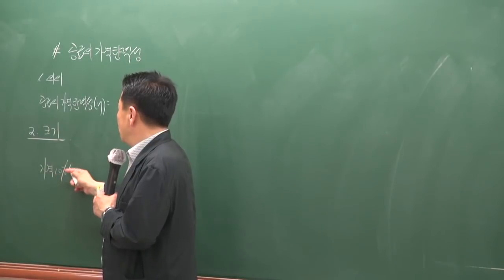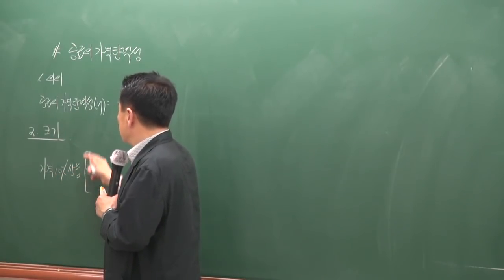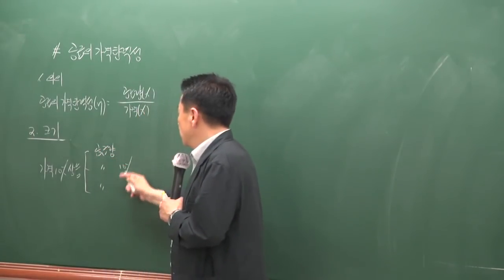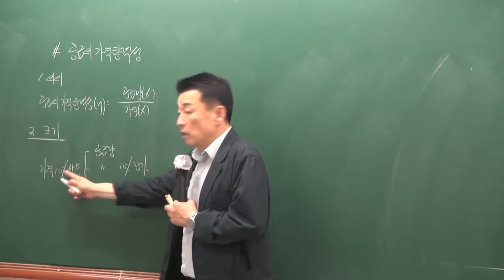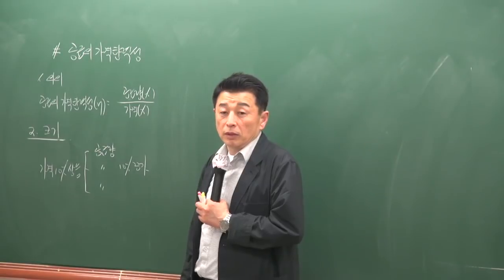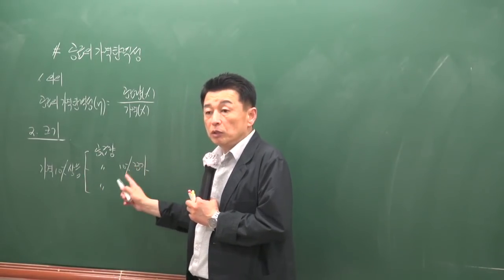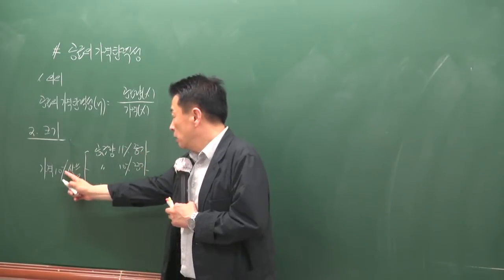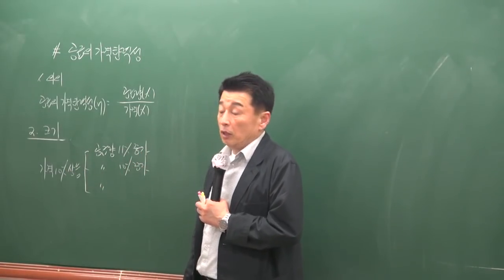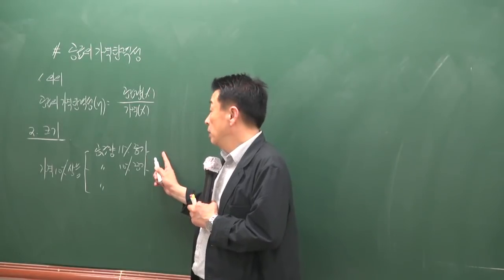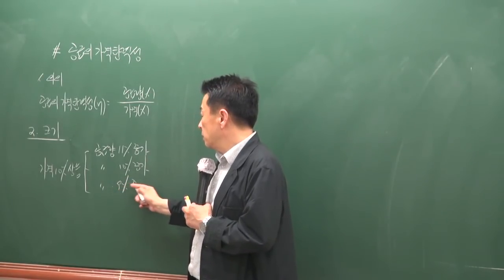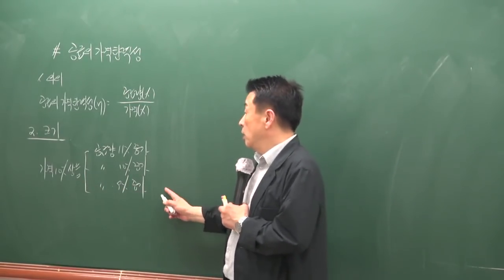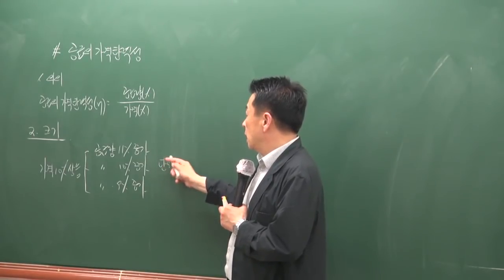가격이 상승했을 때 공급량은 다 증가하죠. 10%가 증가할 때 같으면 단위 탄력적이라고 해요. 10분의 10이니까 1이잖아요. 11%가 증가하면 가격 변화율보다 공급량 변화율이 크니까 1보다 크면 탄력적이죠. 9%가 증가하면 가격 변화율보다 양의 변화가 작으니까 비탄력적이에요.